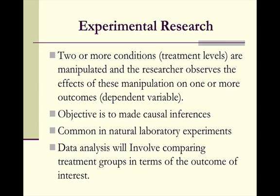When you look at experimental research, you have two or more conditions — treatment levels — which are manipulated, and the researcher observes the effects of these manipulations on one or more outcomes. There's a dependent variable and an independent variable. Your objective in experimental research is to make causal inferences, and it's common in natural laboratory experiments.